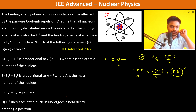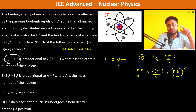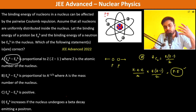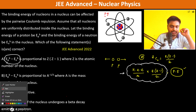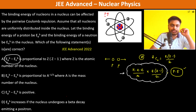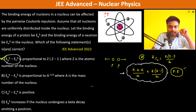Let us go through the options one by one. For option A: Epb minus Enb — the binding energy of protons will be lesser and the binding energy of neutrons will be greater. The difference is proportional to Z(Z-1), so the first option is correct.